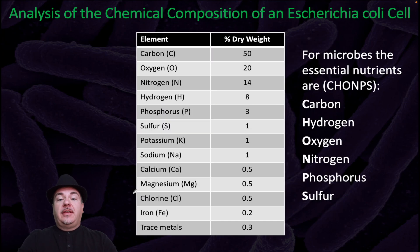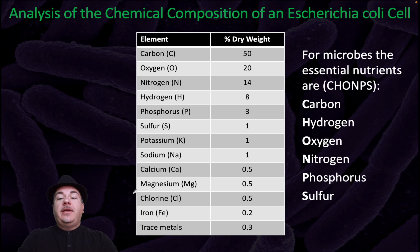If we break it down even further, again looking at the dry weight of the cell, carbon atoms make up 50% of the dry weight, oxygen 20%, nitrogen 14%, hydrogen 8%, phosphorus 3%, and sulfur 1%. For microbes, the essential nutrients are carbon, hydrogen, oxygen, nitrogen, phosphorus, and sulfur, and it's often represented by the abbreviation CHOMPS — C-H-O-N-P-S.